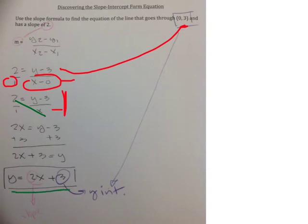Or, as what's written down here, Y equals 2X plus 3. The 2 is that slope, and the Y-intercept is the 3. That's just discovering how you get to that slope-intercept form equation.